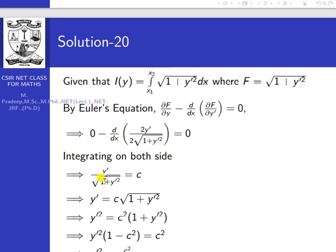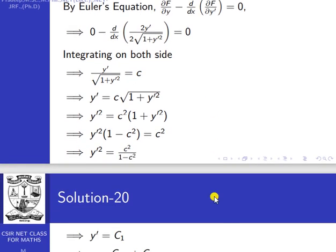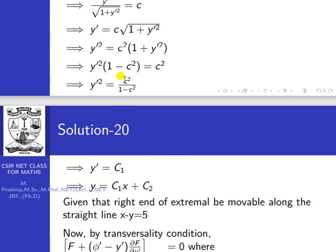Integrating both sides, y' / √(1 + y'²) = c. So y' = c·√(1 + y'²), which gives y'² = c²(1 + y'²). Rearranging: y'²(1 − c²) = c², so y'² = c²/(1 − c²). Denoting c²/(1 − c²) as c₁², we get y' = c₁. Integrating, the extremal is y = c₁x + c₂.